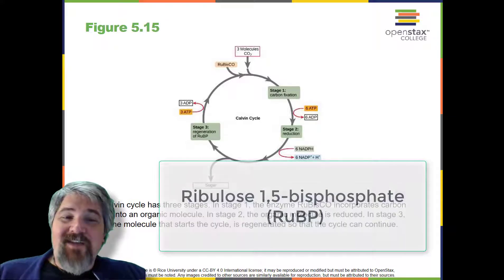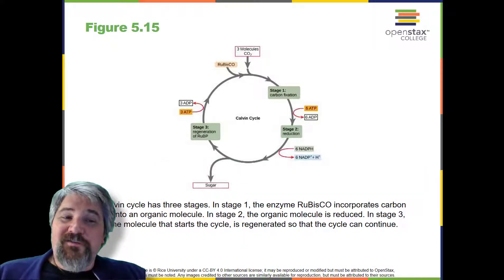RuBP has five atoms of carbon and a phosphate group on each end. RuBisCO catalyzes a reaction between CO2 and RuBP, which forms a six-carbon compound that is immediately converted into two three-carbon compounds.